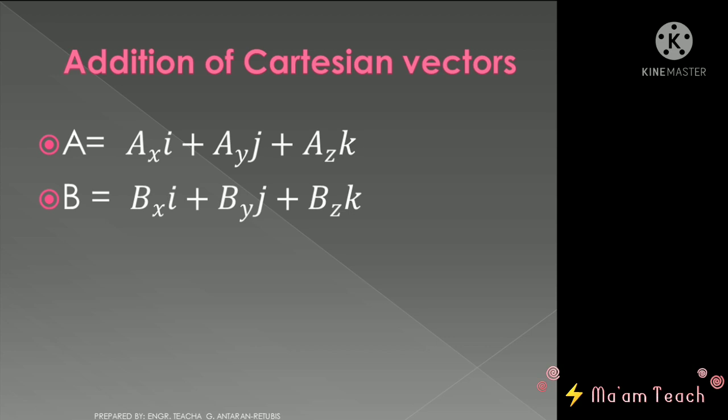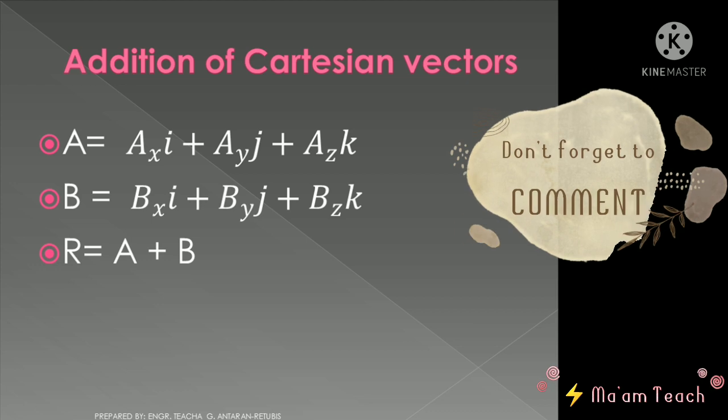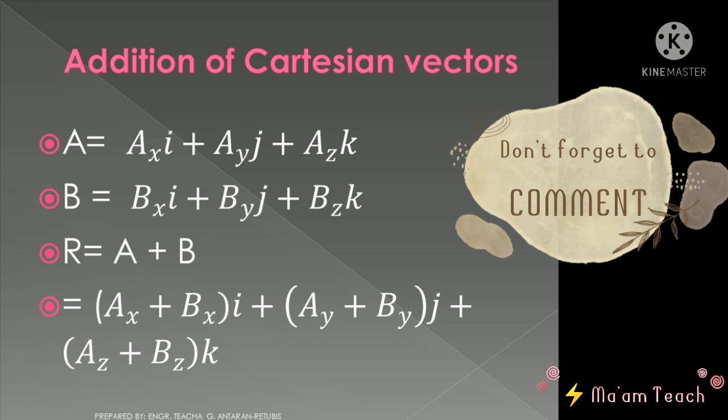So how are we going to add it using vector addition? In order for us to solve for the resultant vector by adding vector A and vector B, we simply have A plus B. But take note that this A plus B is not arithmetic but vector addition.